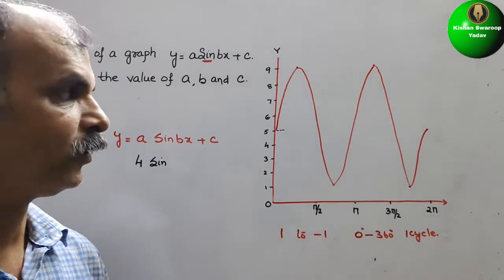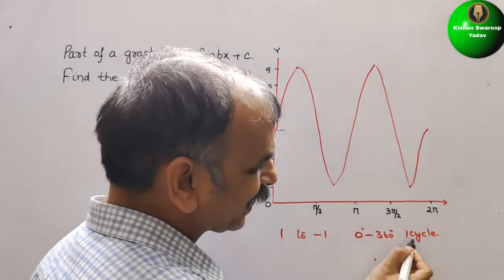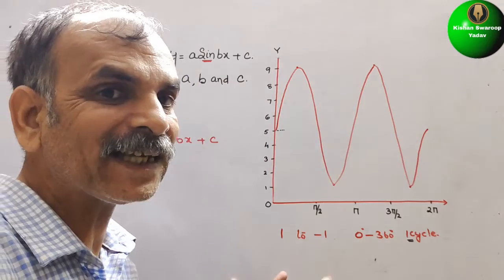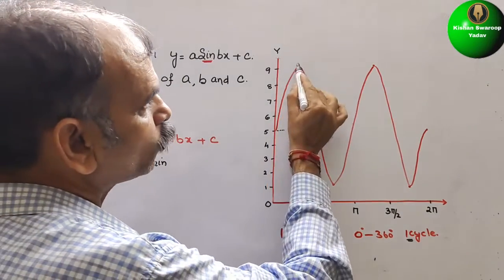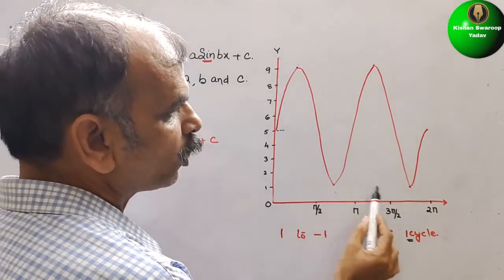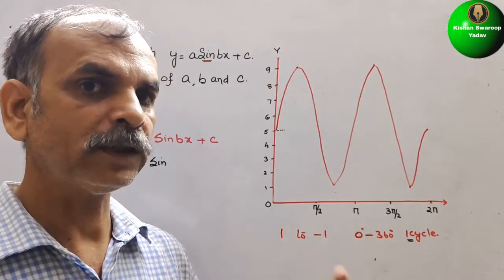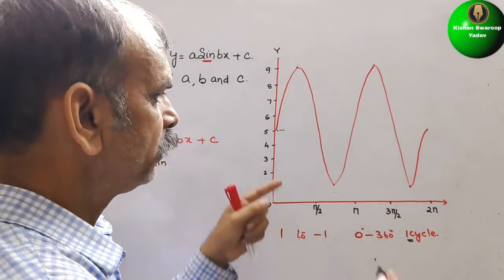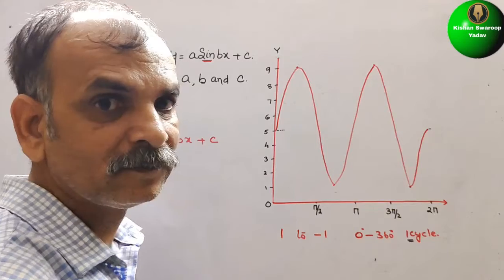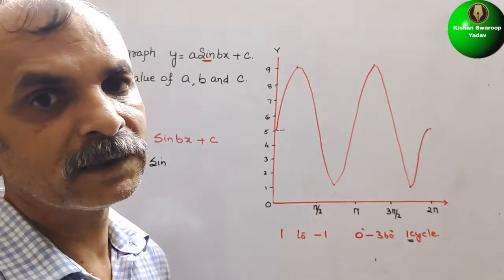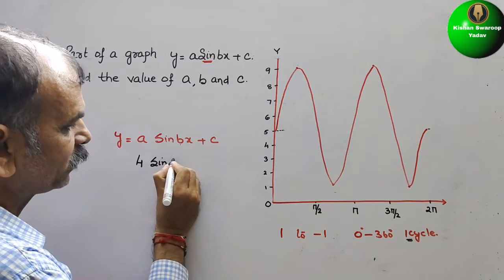Next, what we have to do you see? I have told 1 cycle in 360 degree. How many cycles are there? You can see. So if you see there are 2 tops and 2 bottoms. So simply we can say that it is 2 cycles. That means here it will come B is 2. So 2x.